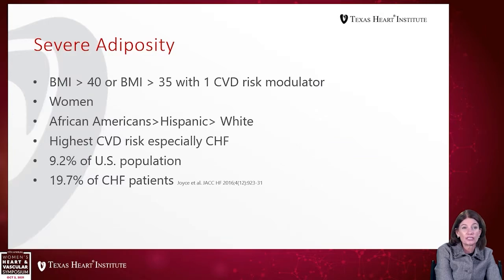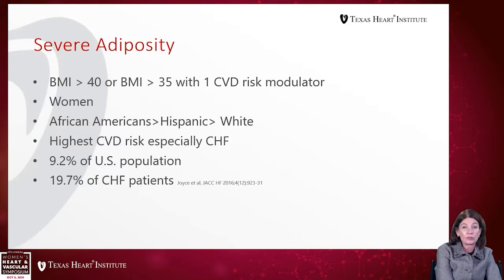Severe adiposity is associated with a BMI over 40 or a BMI over 35 with one additional risk modulator. Women are more likely than men to have severe adiposity, and African Americans are at greater risk than Hispanics, who are at greater risk than white people. The highest risk of cardiovascular disease associated with severe adiposity is, most importantly, heart failure. In fact, 9.2% of the U.S. population in 2020 was characterized as severely obese, but almost 20% of heart failure patients have severe obesity.